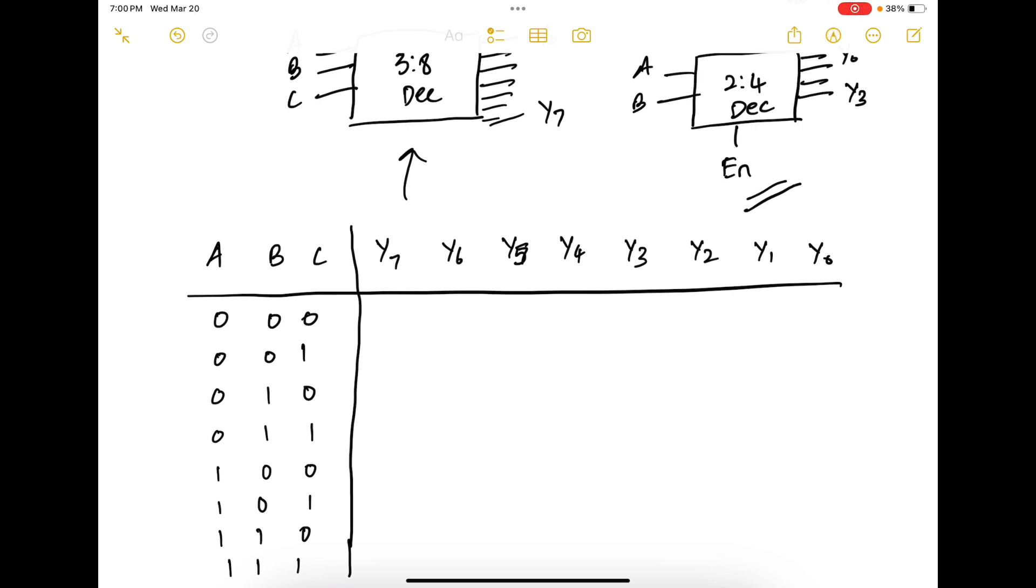When ABC is 000, line 0 is activated followed by line 1, line 2, line 3, line 4, line 5, line 6 and line 7.